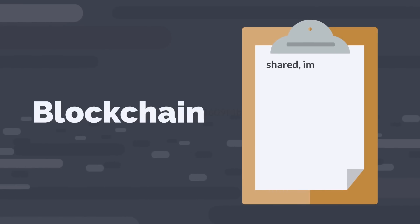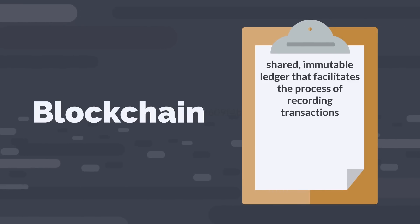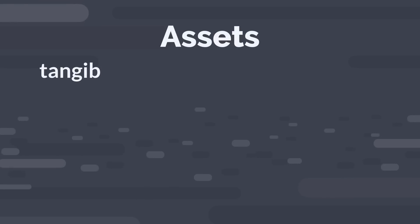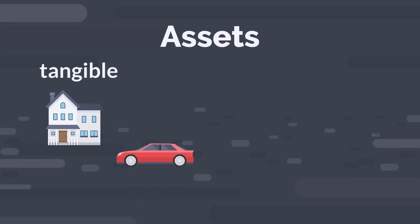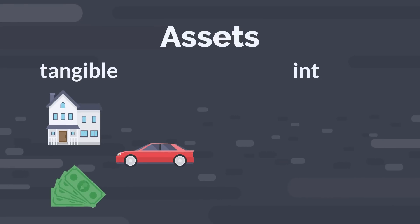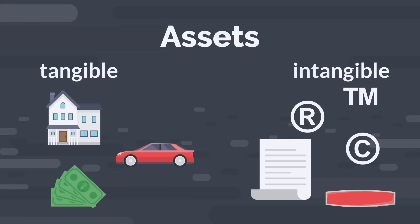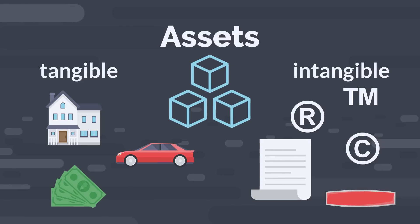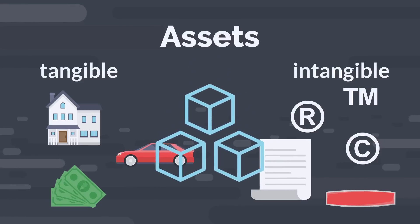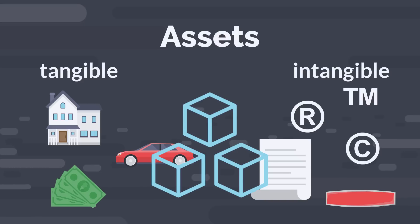Blockchain is a shared, immutable ledger that facilitates the process of recording transactions and tracking assets in a business network. An asset can be tangible — for example a house, car, cash, land — or intangible, such as intellectual property, patents, copyrights, or branding. Virtually anything of value can be tracked and traded on a blockchain network, reducing risk and cutting costs for all involved.